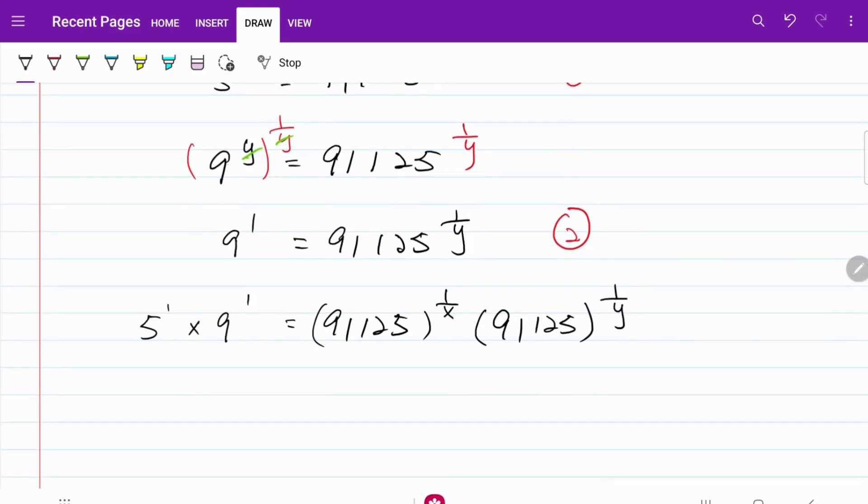No surprises on the left hand side. It's pretty straightforward. That's just 5 times 9, so that's equal to 45. On the right hand side, I'm going to make use of the simple rule of indices and turn this into 91,125 to the power of 1 over x plus 1 over y. And that's the entity that we are interested in.